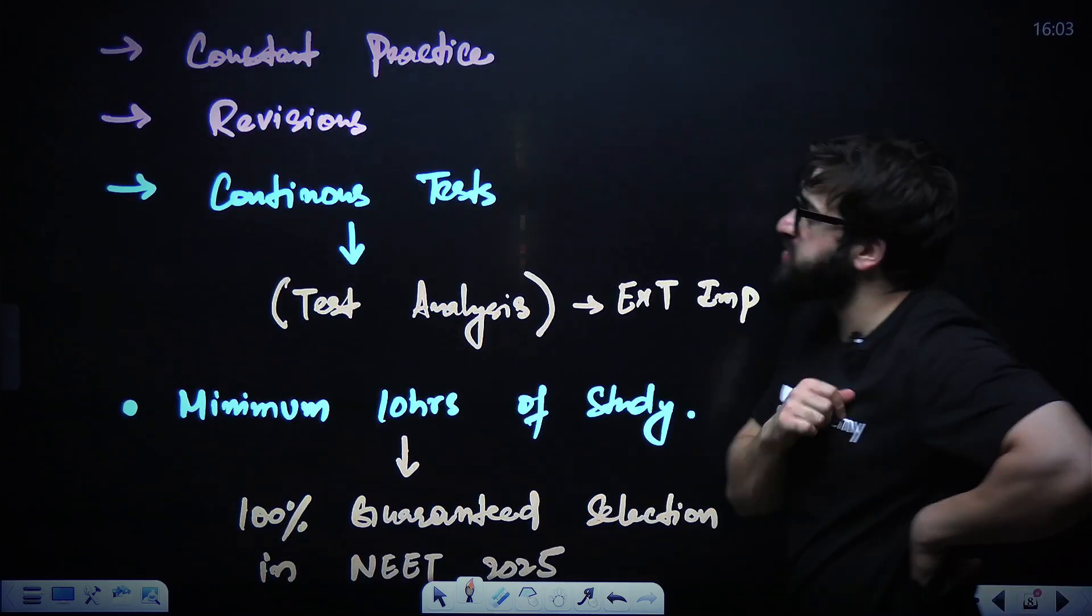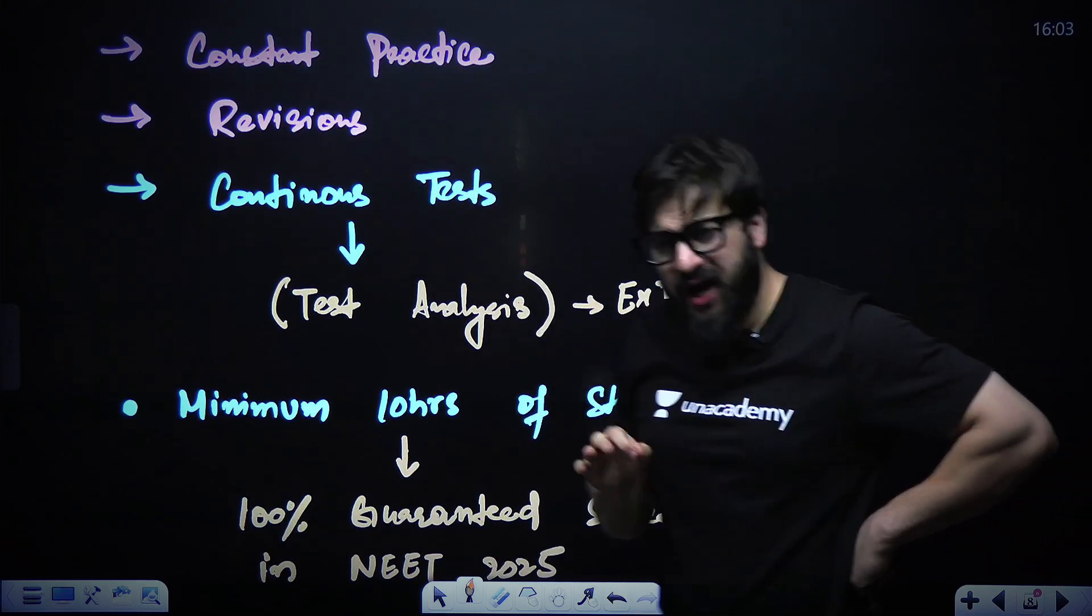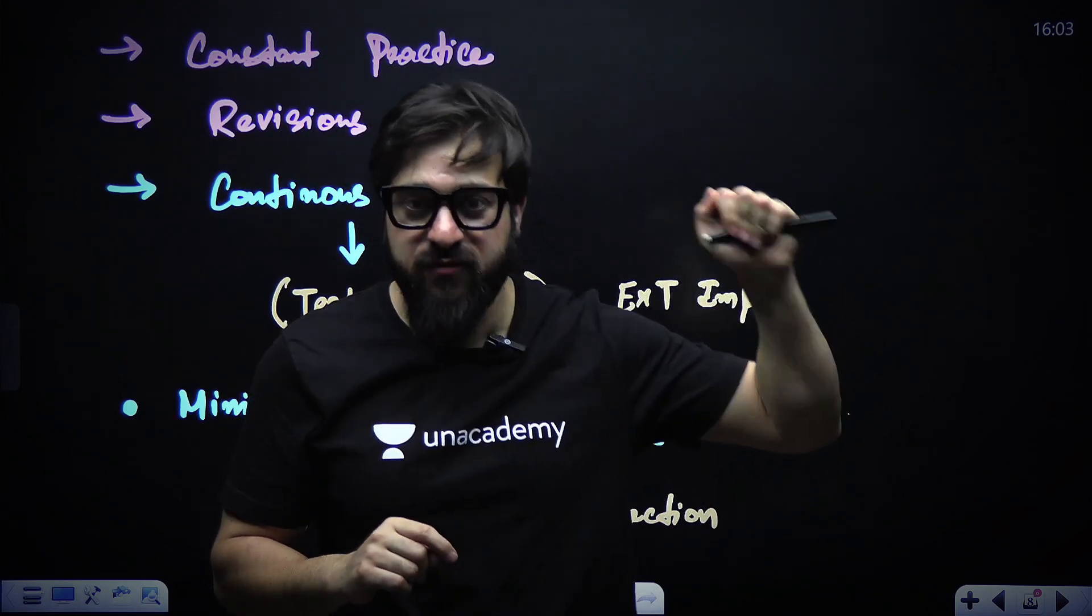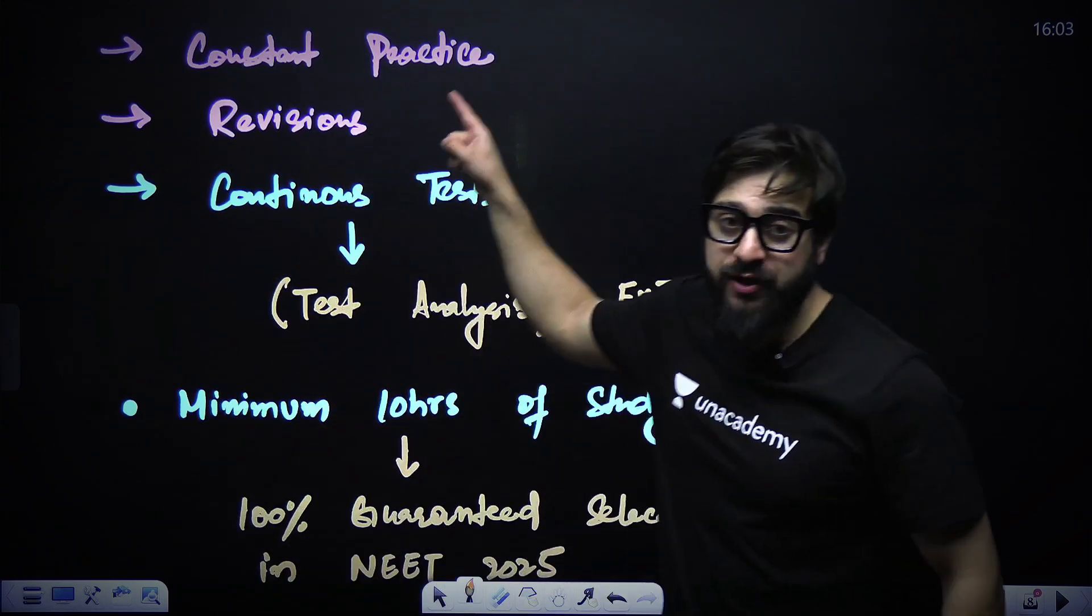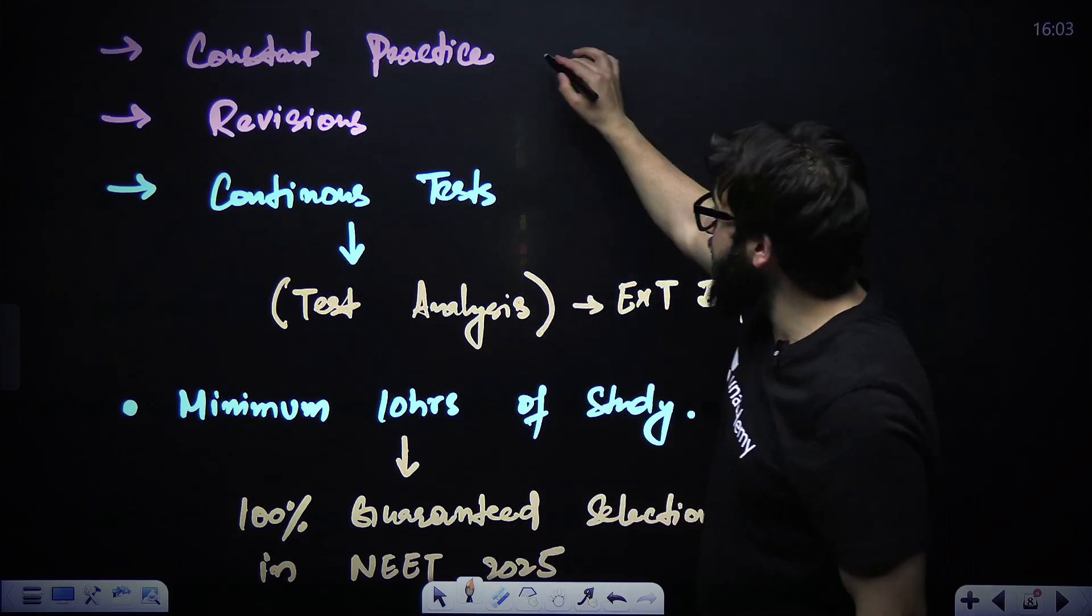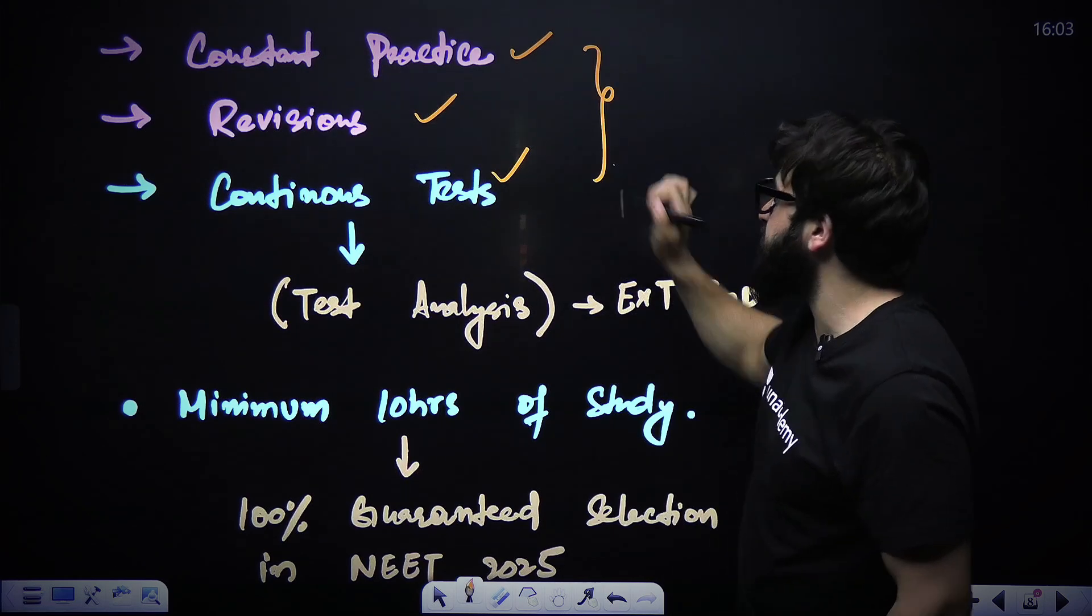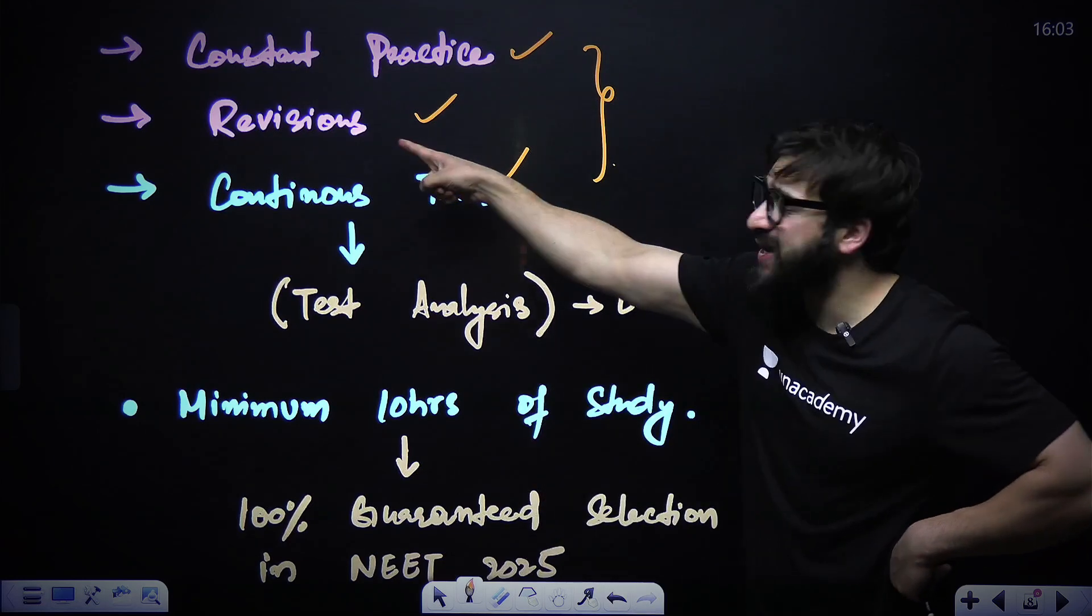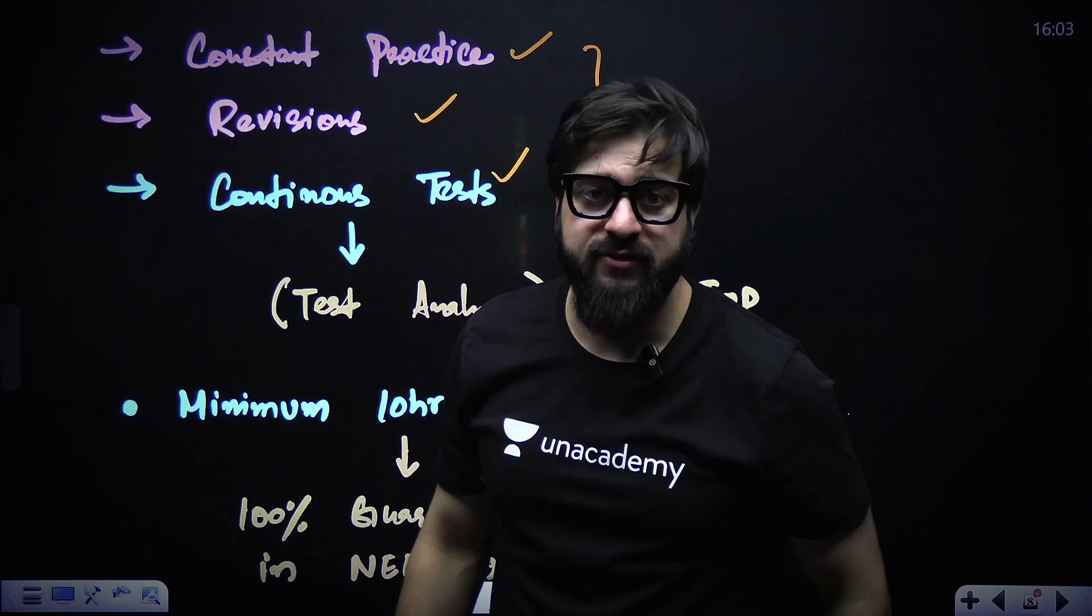Now my dear friends, it requires constant practice, revisions, and continuous tests. I know there are a lot of students watching this video who have got 630, 640, 610 in their NEET 2024, but still they couldn't enter the medical college. They are already done with the syllabus. What is that thing that will help them to increase or boost their marks? That is constant practice, revisions, and tests. These three things only. So you just have to do these. If you lag in the tests, if you lag in the revisions, constant practice, then you'll get the same result in NEET 2025. That's for sure.